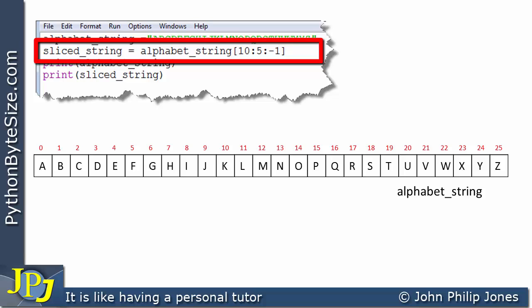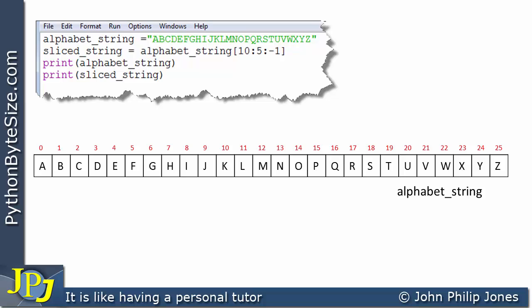The second line of the program is going to take a slice of this particular string. We start off by looking at the 10, and the 10 marks the index position from which we start to take the slice.